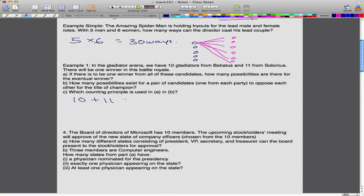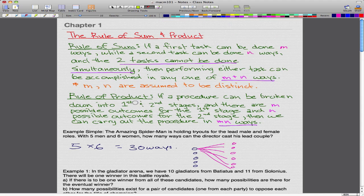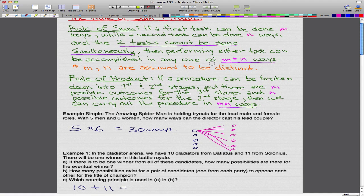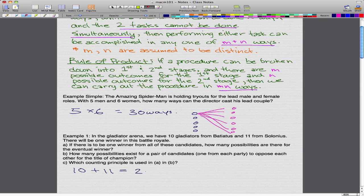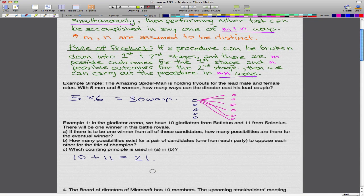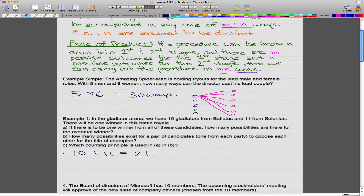We have 10 gladiators from Batiatus and 11 from Solonius. This is an example of the rule of sum, because as you can see here, there are 2 things that cannot be on the same team. We have 10 people from Batiatus' team and 11 people from Solonius' team. So there's 21 different people. If each of them are going to kill each other, then for the eventual winner, there can be 21 different ways, because there are 21 different individuals that can win.